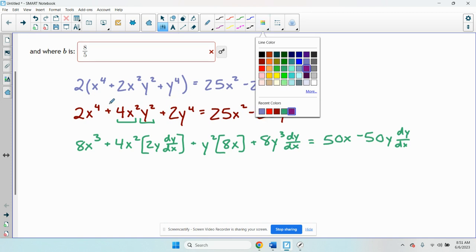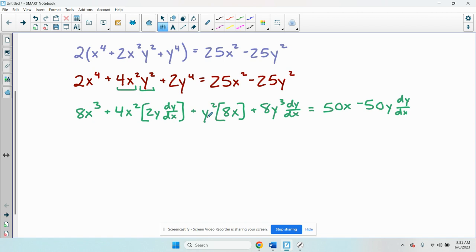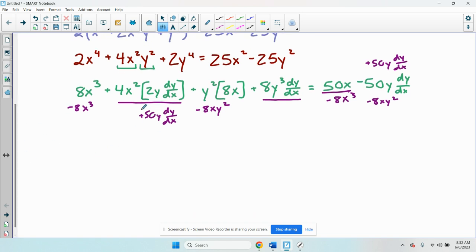Now I'm going to move everything with the dy dx to the left hand side and everything without a dy dx to the right hand side. So this is going to stay, this whole thing is going to stay. I'm going to subtract 8x cubed, I'm going to subtract this is 8xy squared, this is going to stay where it is, and then I'm going to add 50y dy dx.